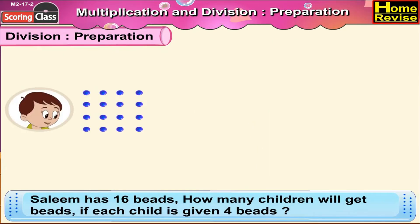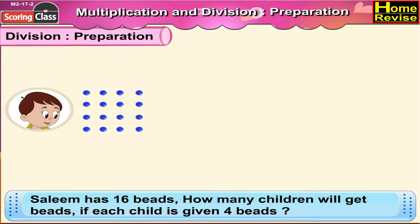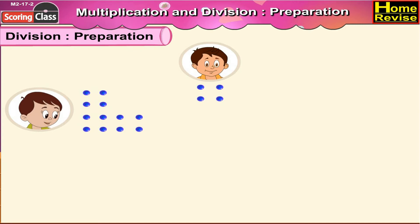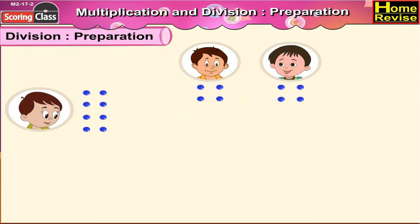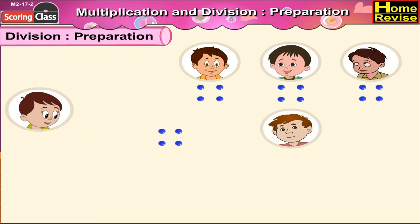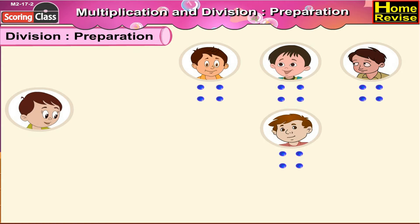Salim has sixteen beads. How many children will get the beads if each child is given four beads? Salim has sixteen beads. He gives four beads to the first, four to the second child, four to the third child, and last remaining four to the fourth child. Now, all the beads are distributed among the children.